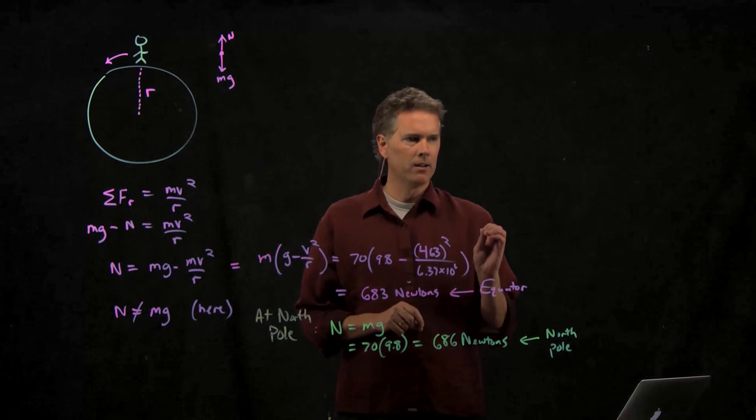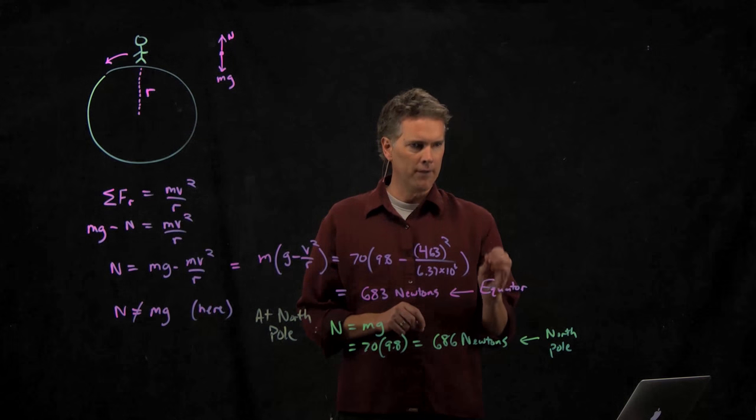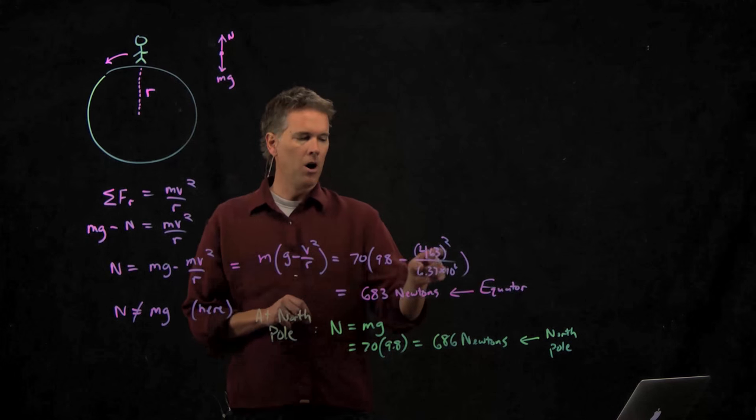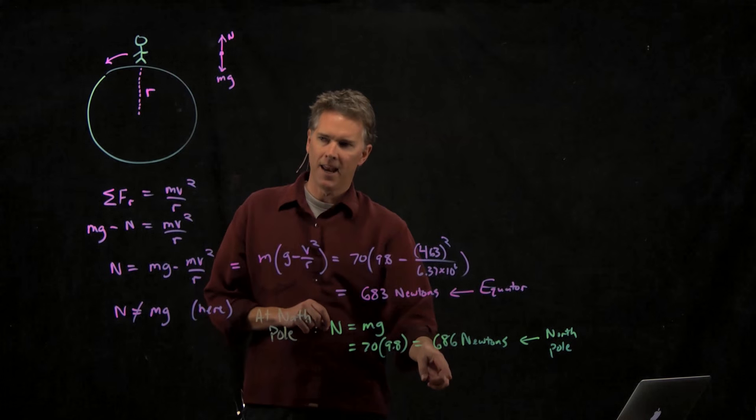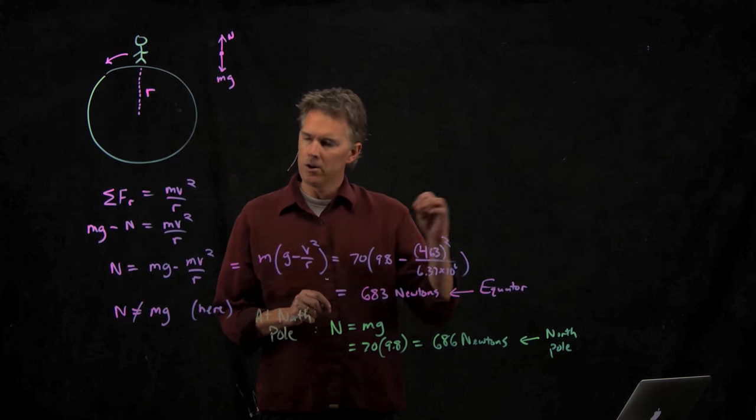So wait a minute. Are we saying that if you're at the equator, that you weigh less than if you're at the North Pole? Is that what we're saying? Remember, your weight, your perceived weight is how hard the ground is pushing up on you. And we just showed that the normal force at the equator is 683 Newtons. The normal force at the North Pole is 686 Newtons. And this is really what happens. If you're at the North Pole, you are about a half percent heavier than when you're at the equator.